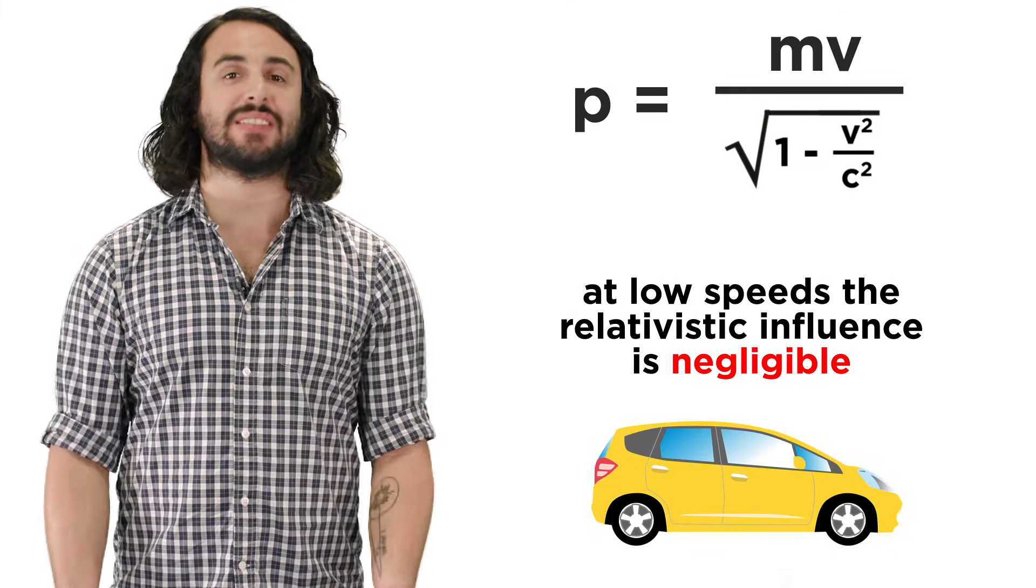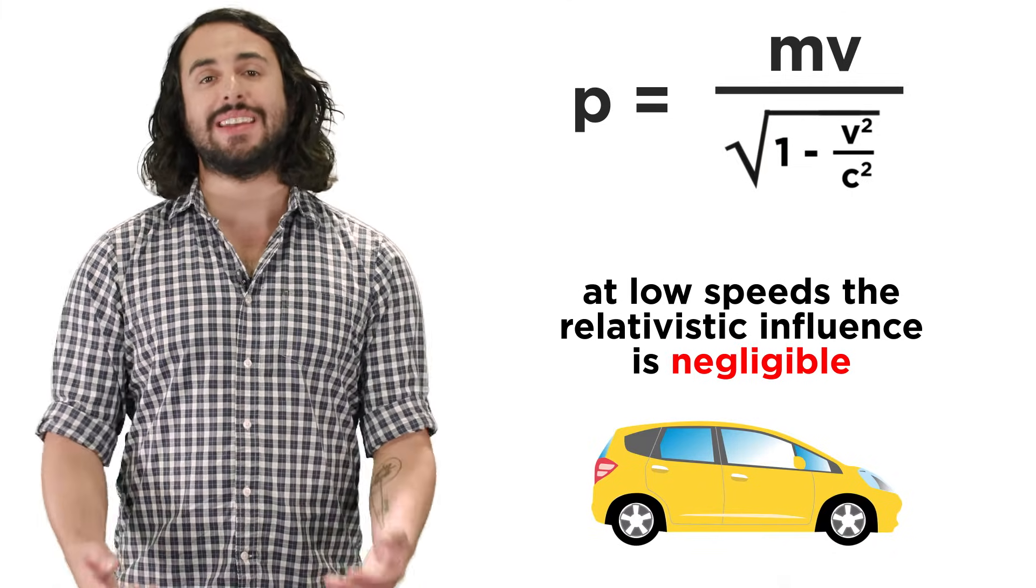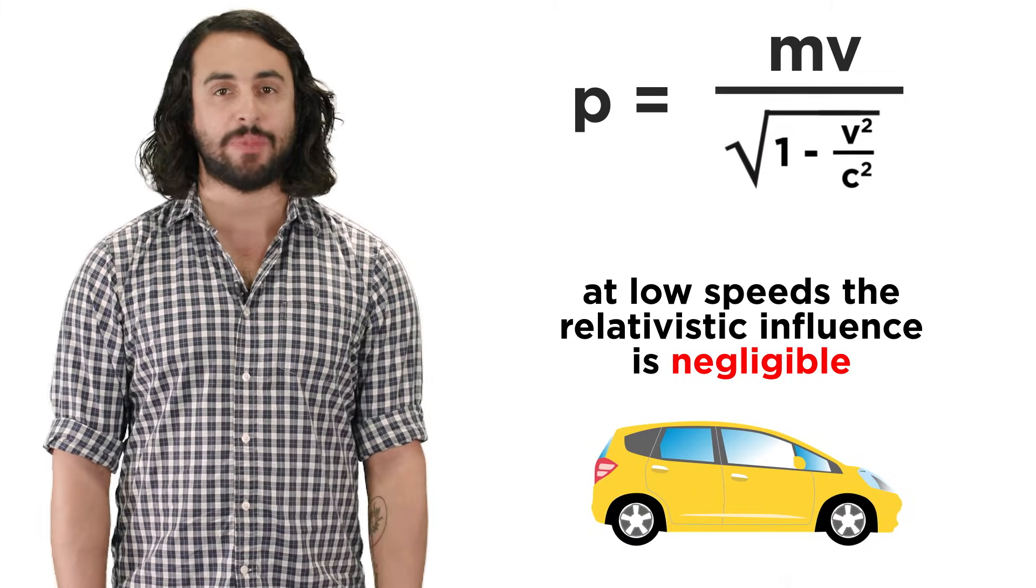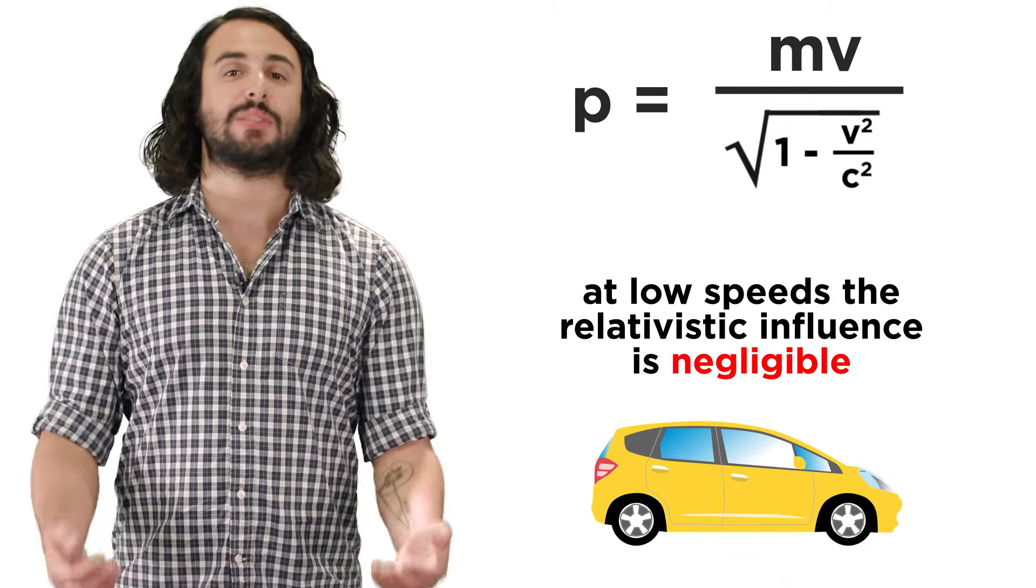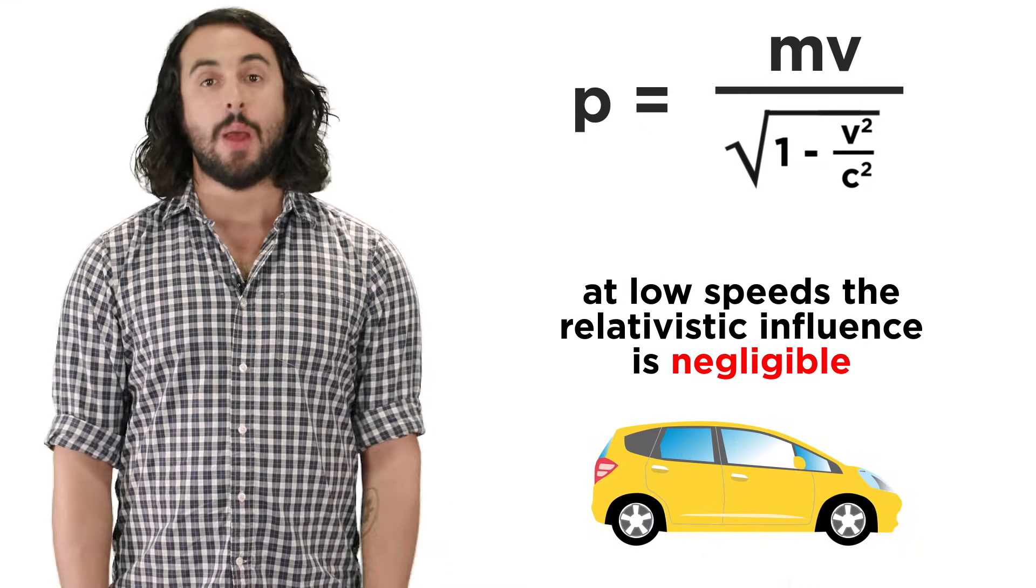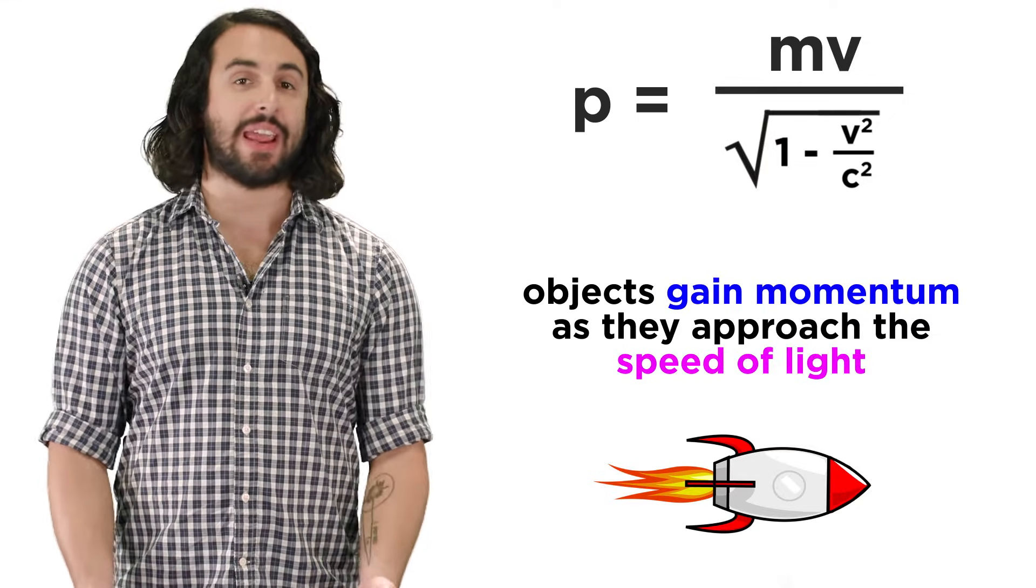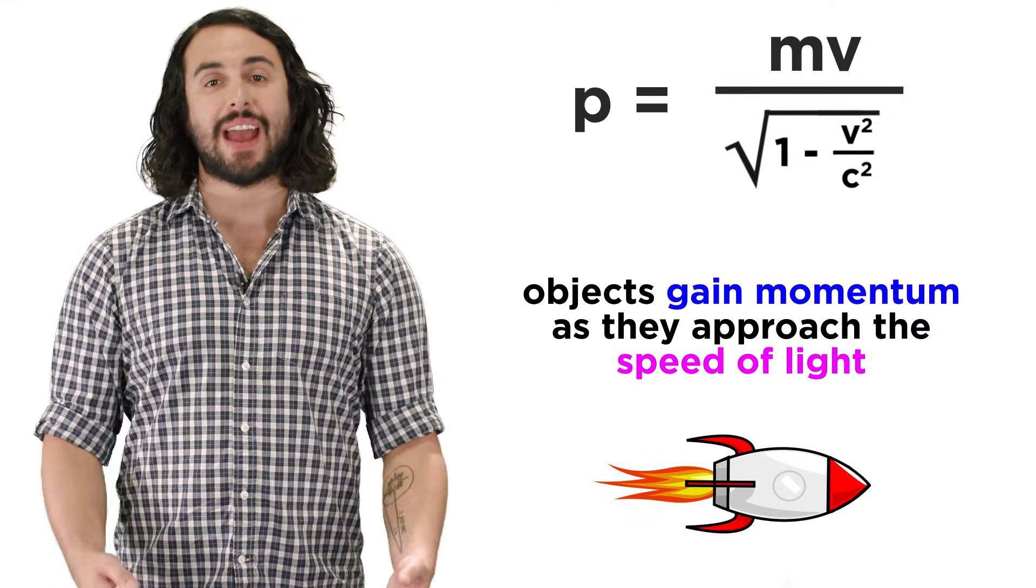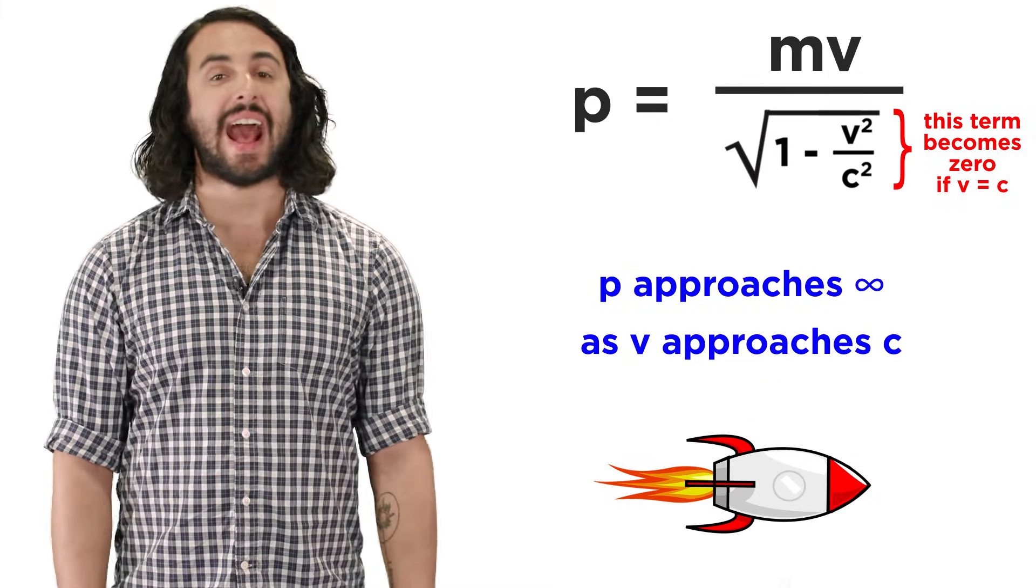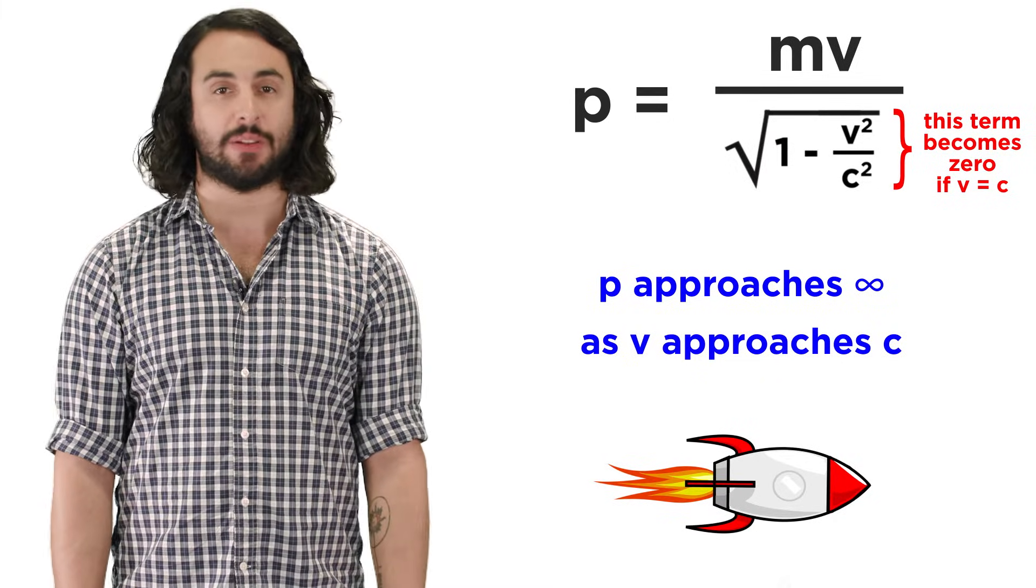At speeds much less than the speed of light, there is only negligible difference between the relativistic and non-relativistic momentum, which is one of the reasons that special relativity is imperceptible in our everyday lives. But as an object approaches the speed of light, it gains momentum exponentially, and the momentum approaches infinity as the velocity approaches the speed of light.